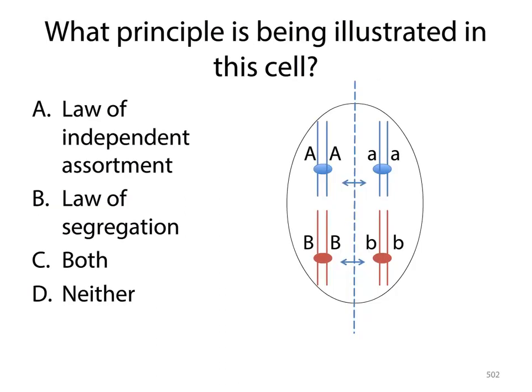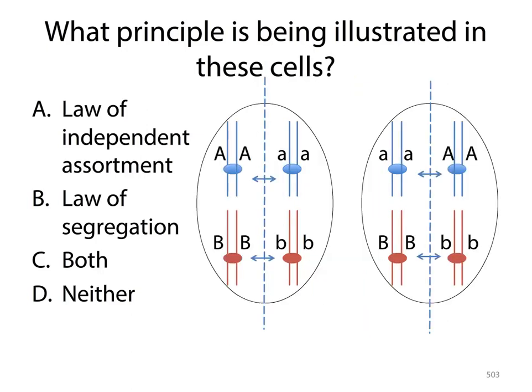So let's go through our first application question. Given what we talked about last time, what principle is being illustrated in this cell? Take a moment, pause lecture, and genuinely look through this and make your decision. In case you happen to be curious, it's when the alleles are separating, in which case it is B — the law of segregation. Hopefully that makes sense. If not, let me know.